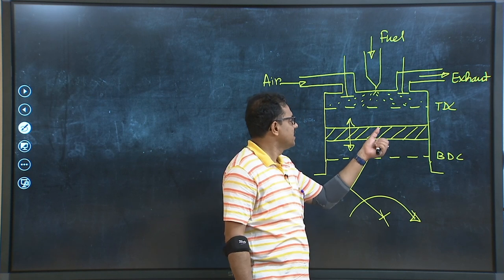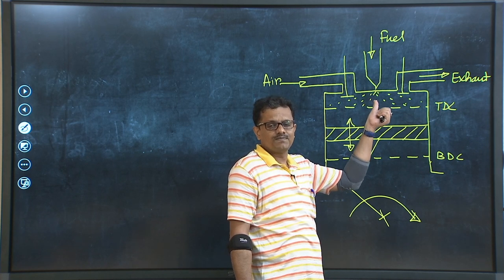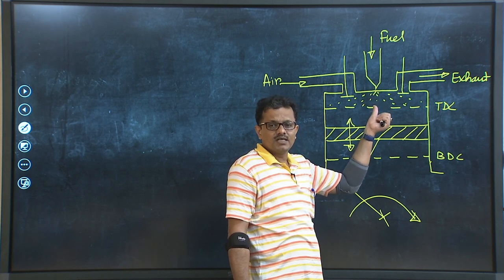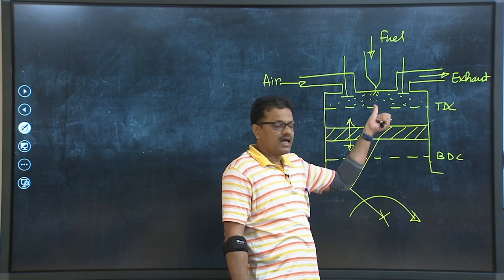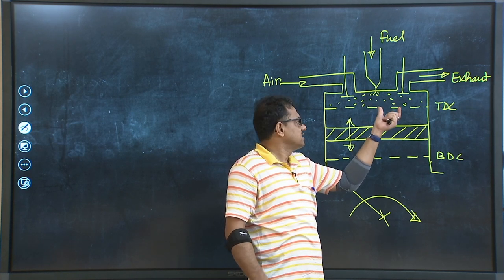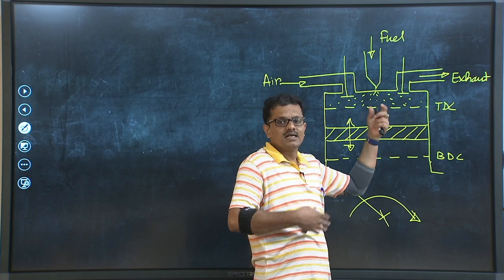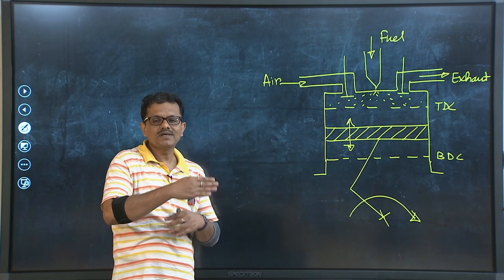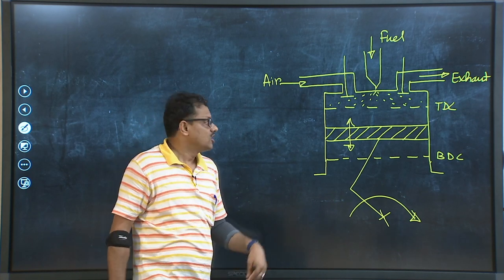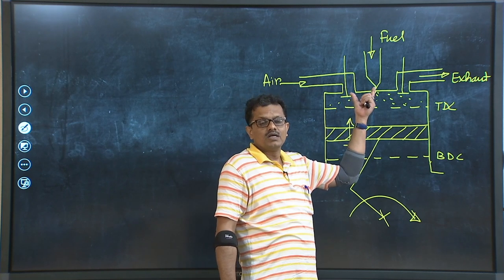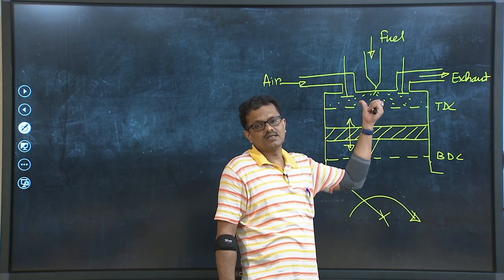We can represent the combustion process by a constant pressure heat addition process, and this is a very good assumption. There will be a rise in pressure during the first phase of combustion, and as the piston travels from TDC to BDC that pressure might fall, but the rise in pressure due to the second phase of combustion will compensate, so as if the pressure is remaining constant during the entire combustion process. That is why the combustion process of a CI engine is represented by a constant pressure heat addition process in the PV plane.